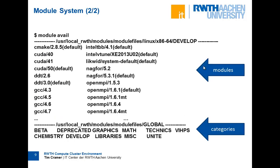In the 'module avail' output you see a list of categories. You only see the full details of a category if it's already loaded. For example, if the 'develop' category is loaded, you see modules like OpenMPI, GCC, debugger, CUDA, and so on. To see modules in a category like 'math' or 'misc', you type 'module load math' and then re-run 'module avail' to see the modules within that category.